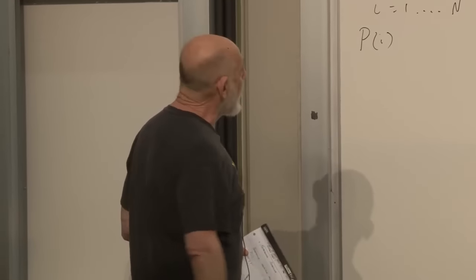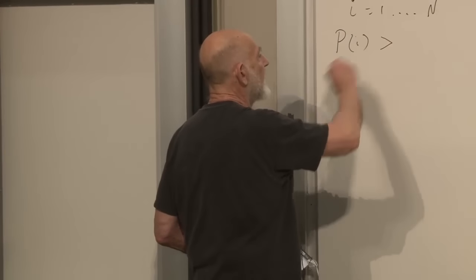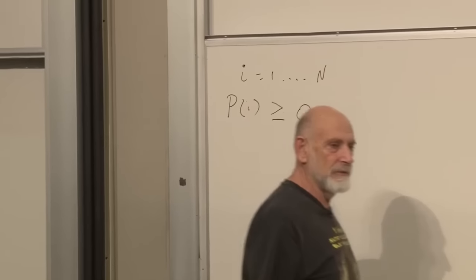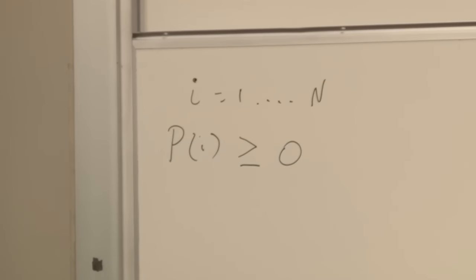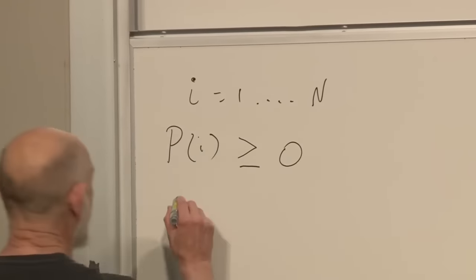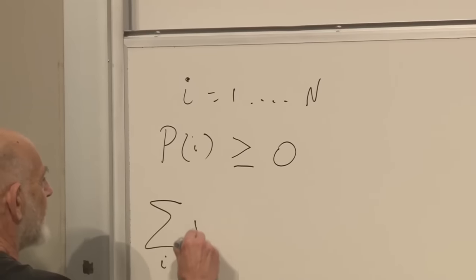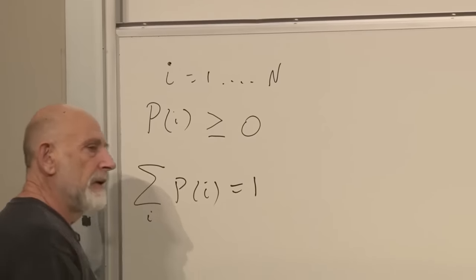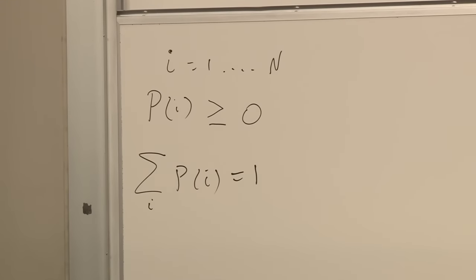The rules for p(i) are: first, p sub i has to be greater than or equal to zero — negative probabilities we don't like. Next, the summation over i of p sub i should equal one. That means the total probability, when you add everything up, all possibilities, should be one — you certainly should get some result.